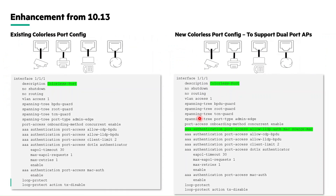With this enhancement, let's look at the new colorless port configuration. The existing configuration is shown on the left, and the new configuration is on the right. The same configuration can now be applied across all client connected ports in the switch, and it supports dual port APs without any impact to other end clients. The key difference is that LLDP authentication is now triggered via the source MAC address instead of the chassis MAC address.